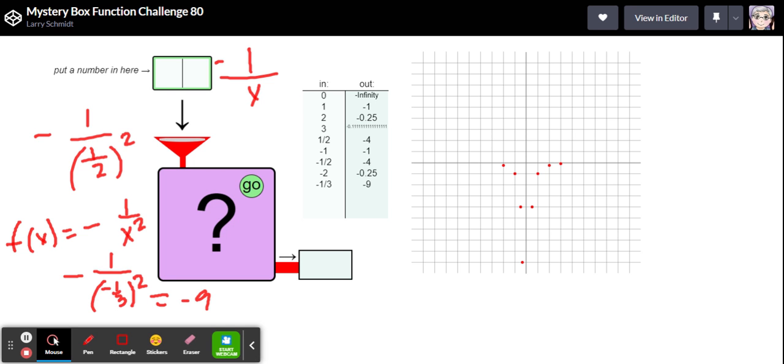And that is negative nine. Okay, I think we've got this. This is f of x equals negative one over x squared. I'm pretty sure, so let's give that a try.